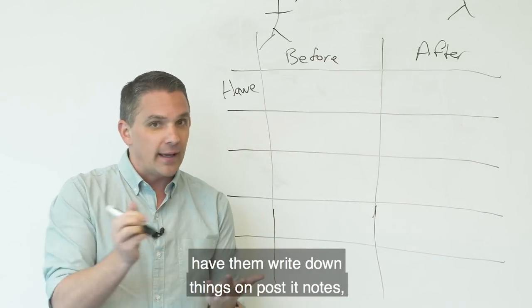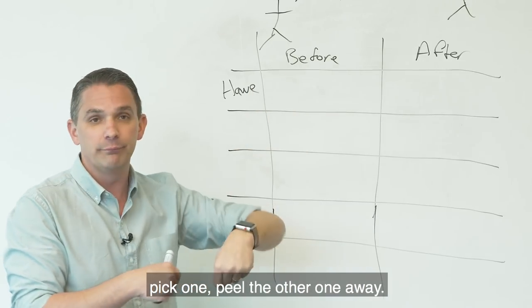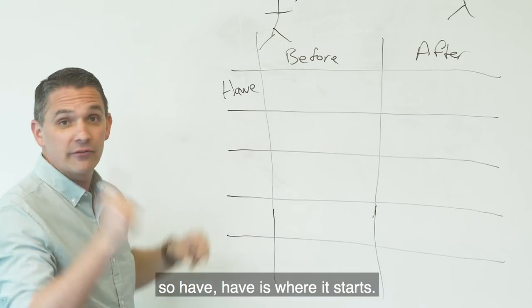And again, if you're doing this with a team, have them write down things on post-it notes. Stick them up here. If you see two things that match, pick one, peel the other one away. But begin to build out your grid. So have. Have is where it starts.